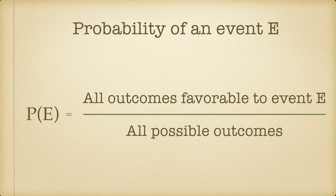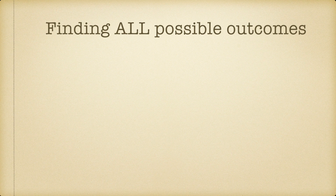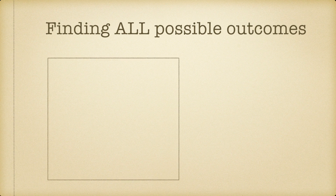The probability of any event E is defined as P of E equals a ratio of all outcomes favorable to the event E, divided by all possible outcomes. Today, we are going to focus on how do we find out all possible outcomes. So let's take a look at a few examples and try to find out what are all possible outcomes.